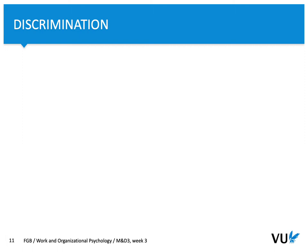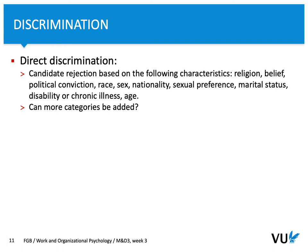Now I'd like to focus on brief definitions of discrimination. On one hand, we have direct discrimination — candidate rejection based on characteristics such as religious beliefs, other types of beliefs, political conviction, race, sex, nationality, sexual preference, marital status, disability, chronic illness, or age. Do you think some additional categories could be added here?